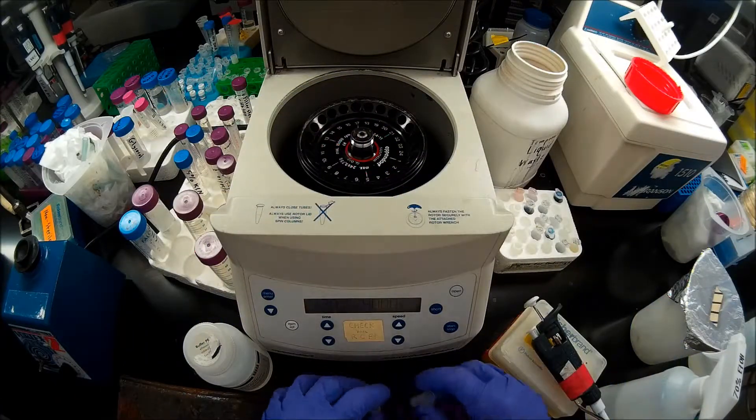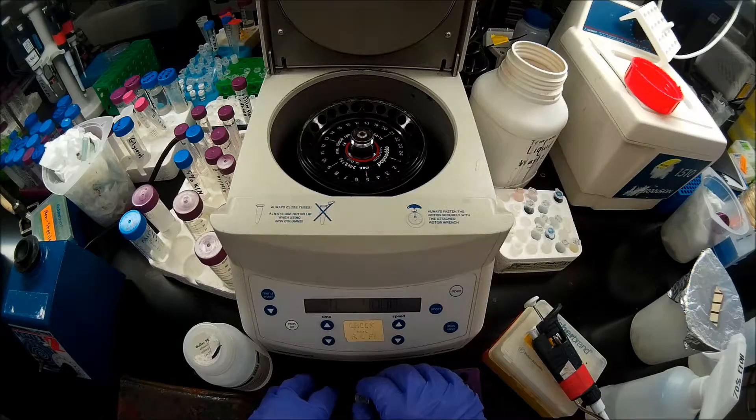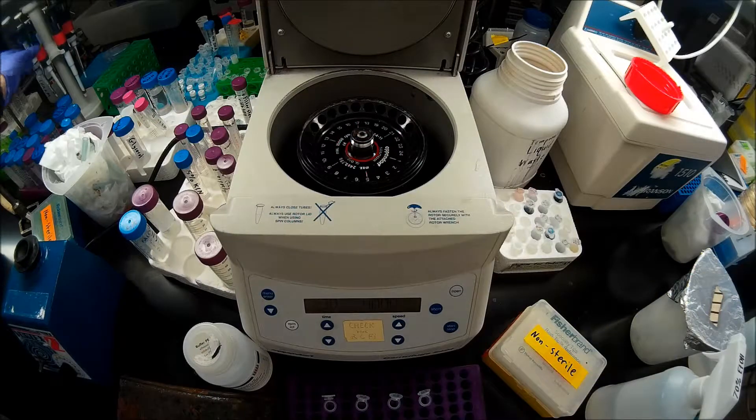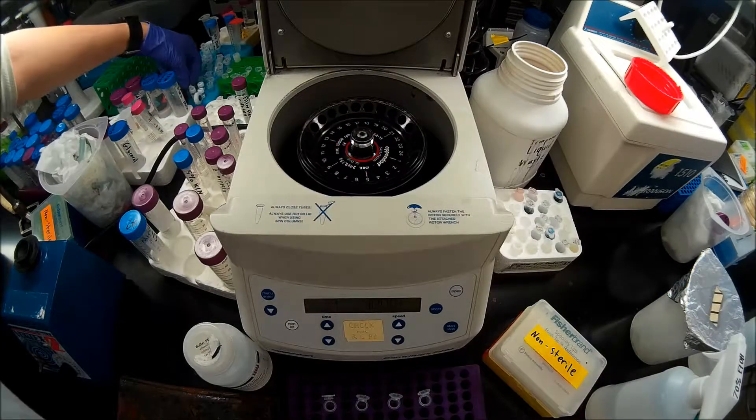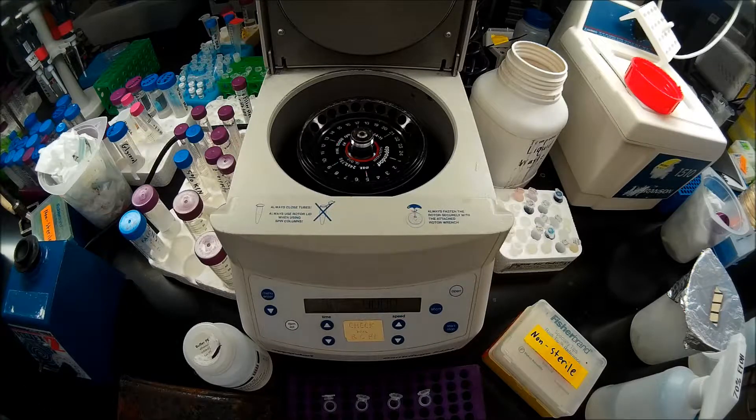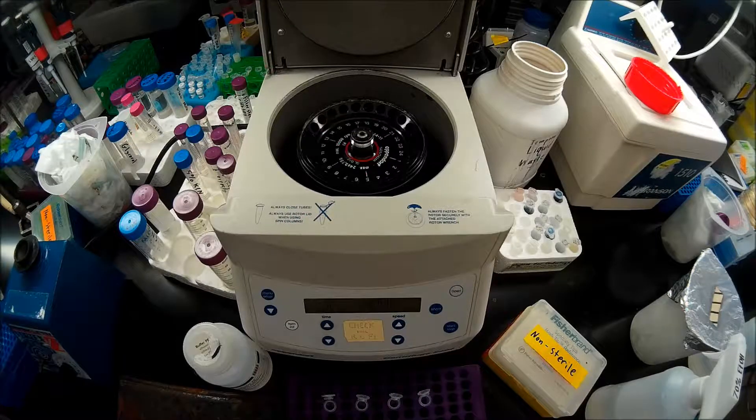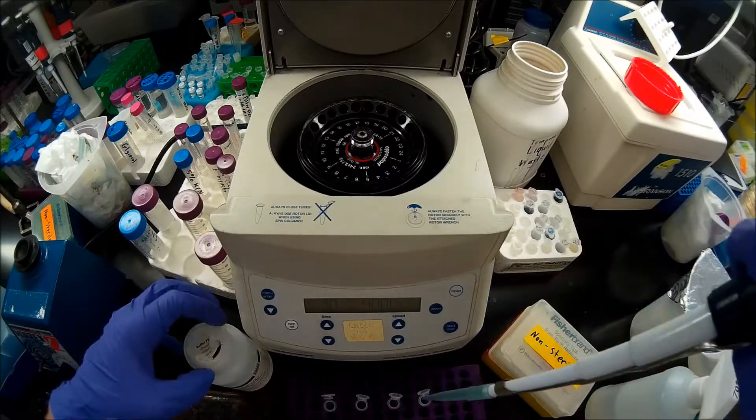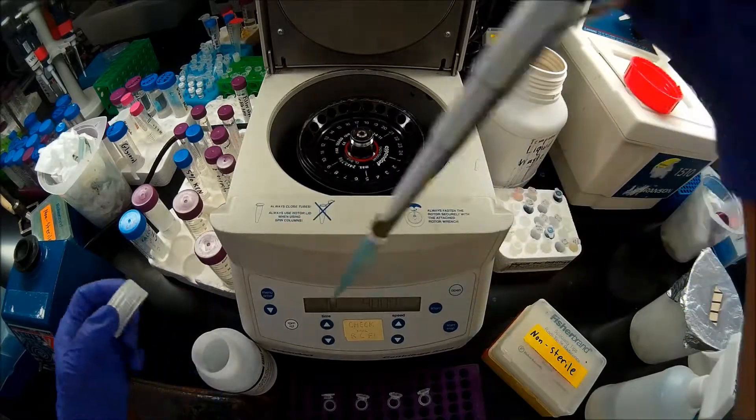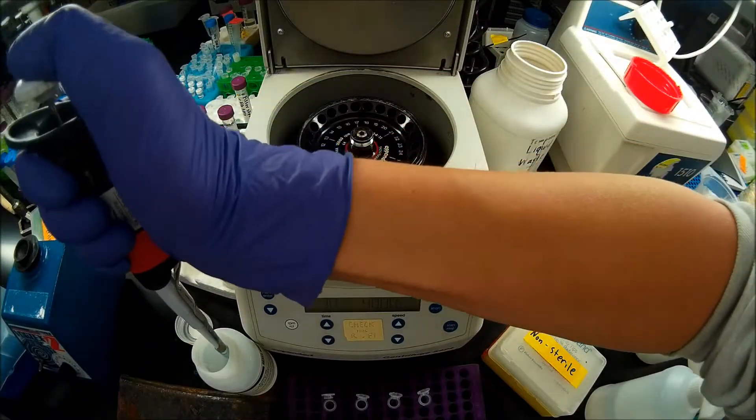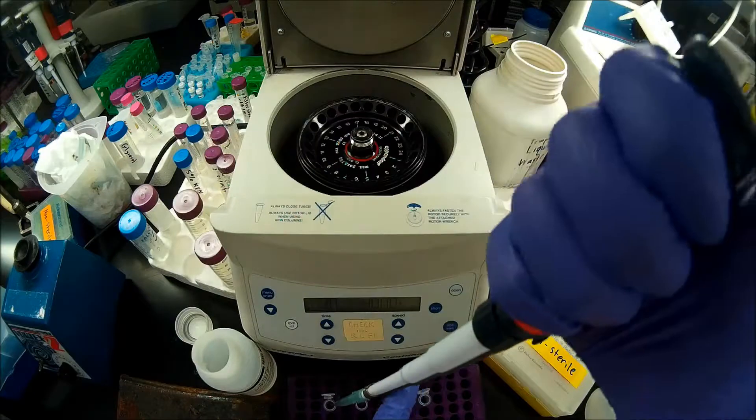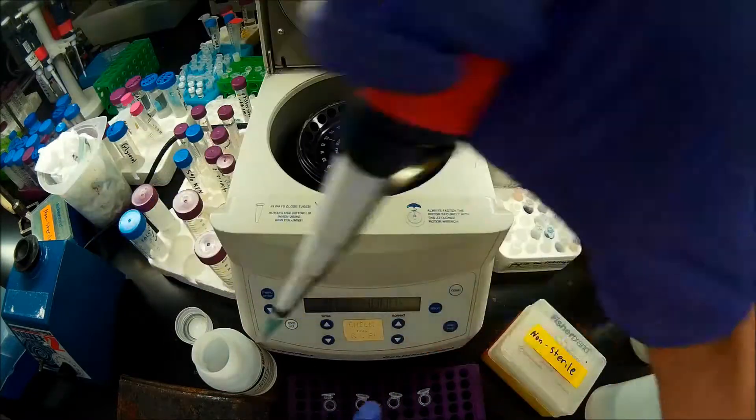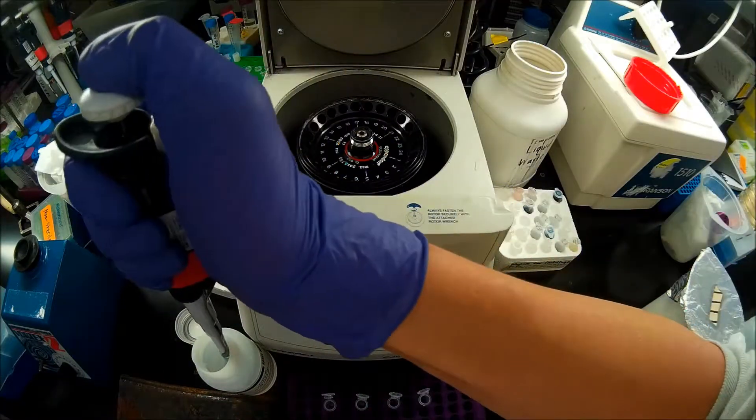Now I'm going to take my PE buffer, just as we would in a DNA cleanup, which again is pretty much what we're doing now. Take my P1000, wash with 750 microliters of PE. So I'm going to re-suspend those on my vortex mixer over here.